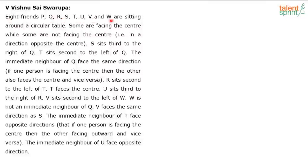Eight friends — P, Q, R, S, T, U, V, and W — are sitting around a circular table. Some are facing the center while some are not facing the center, that is, facing in an opposite direction to the center.